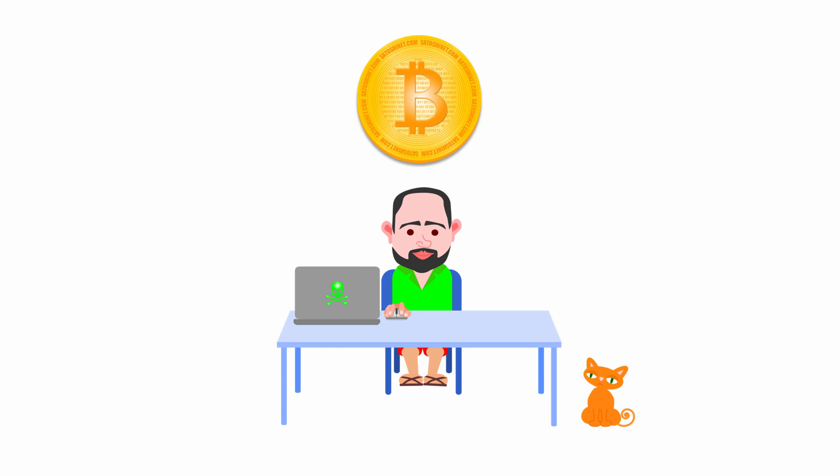Bitcoin was officially launched in January 2009, and the first ever Bitcoin transaction took place on May 22nd, 2010, when Laszlo Hanya spent 10,000 Bitcoins on two pizzas from Papa John's. 10,000 Bitcoins were worth about 40 American dollars back then. These days, 10,000 Bitcoins are worth about 389 million dollars. May 22nd is now known as Bitcoin Pizza Day.